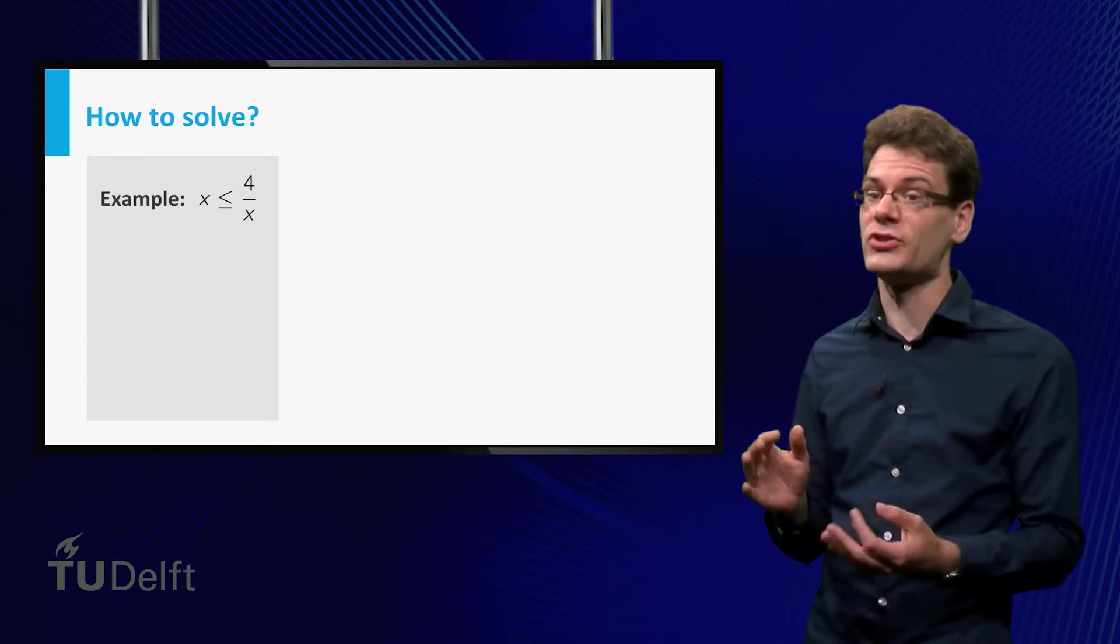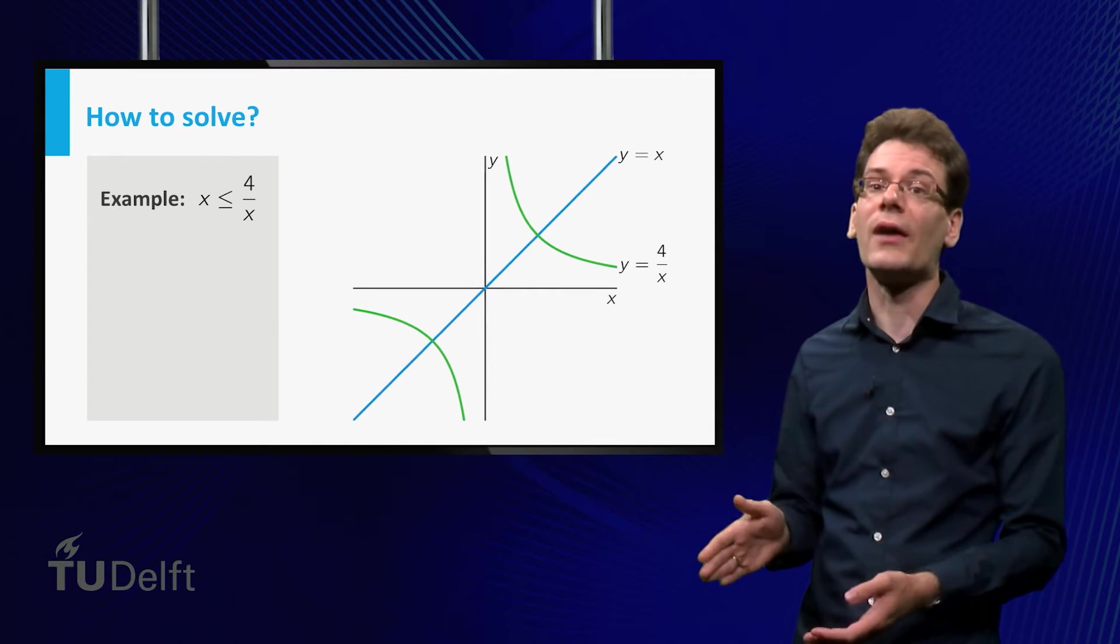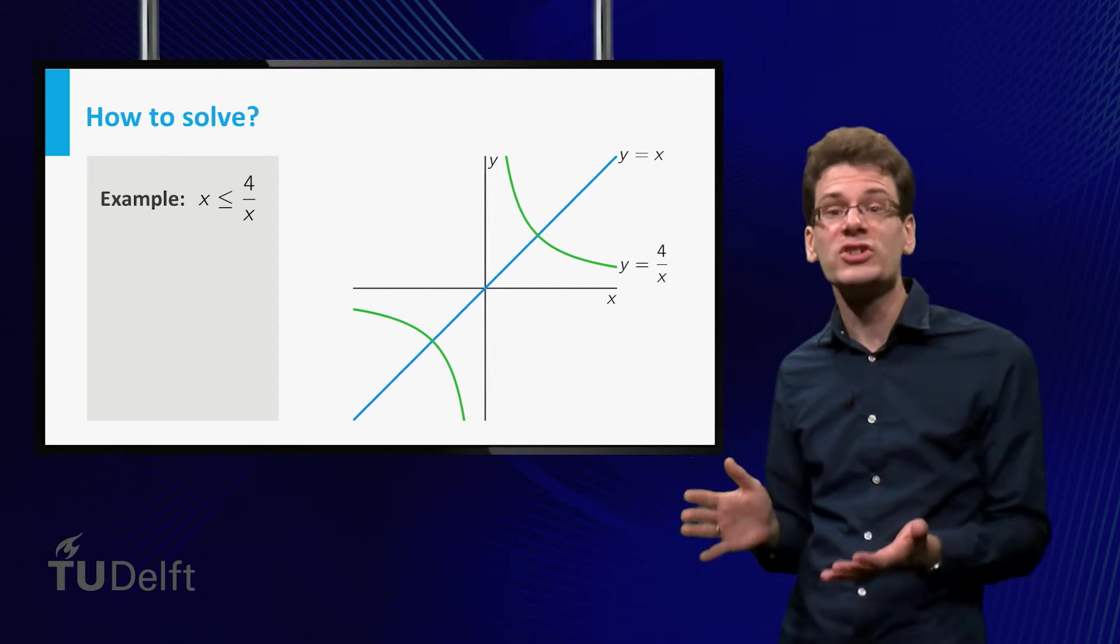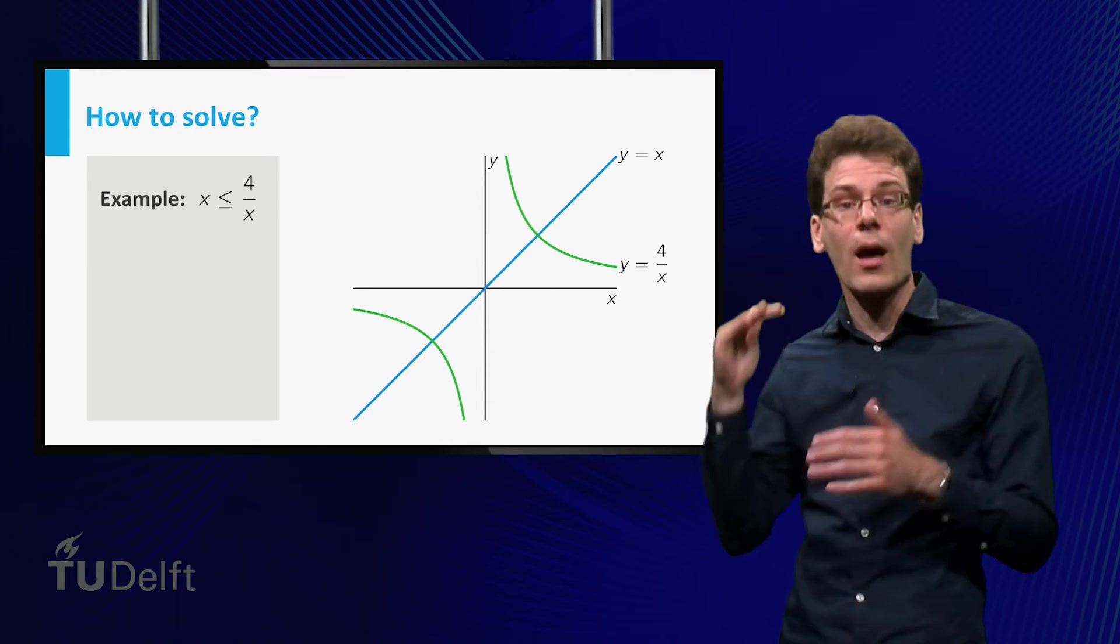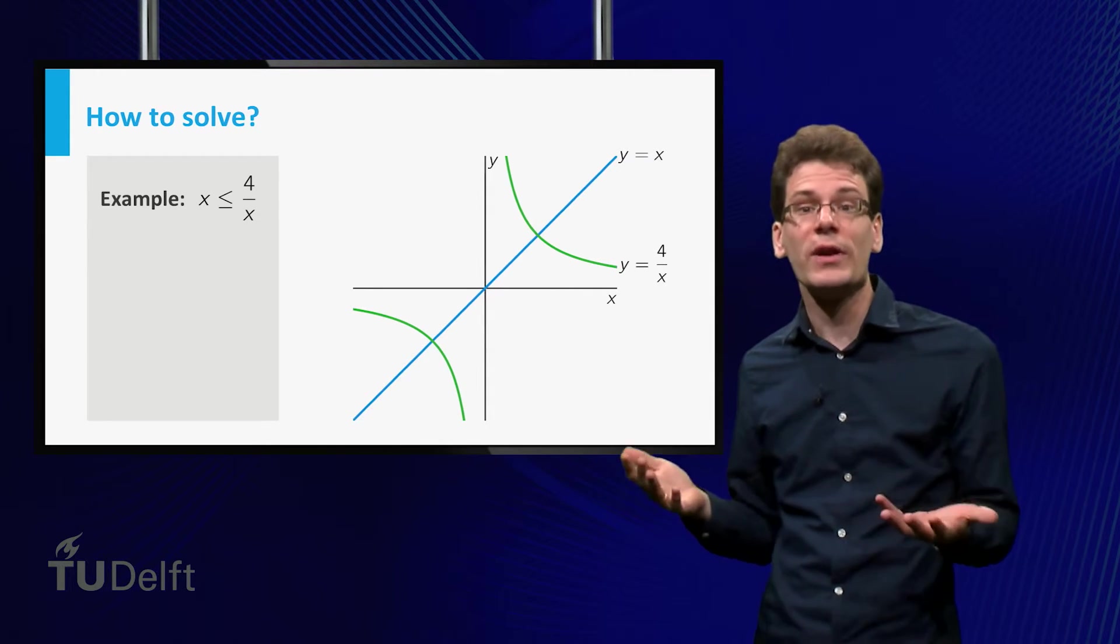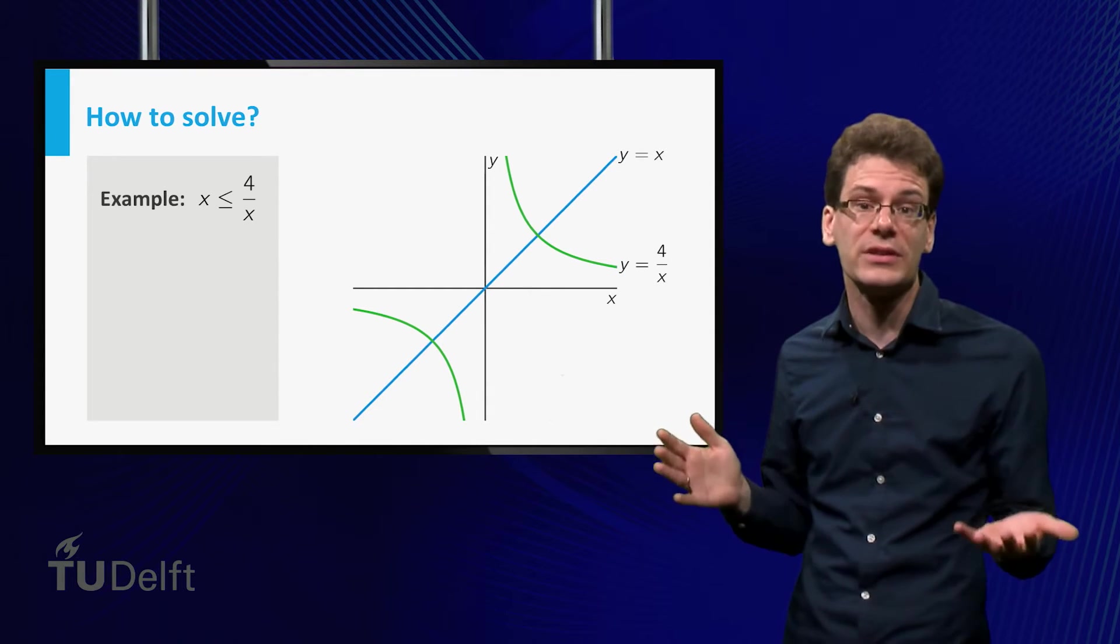Before I tell you how to solve such an inequality, let me show you the graphs. The inequality amounts to the following question: For which x values does the green line lie above the blue one? The graph suggests that there are two intervals on which the inequality is satisfied.